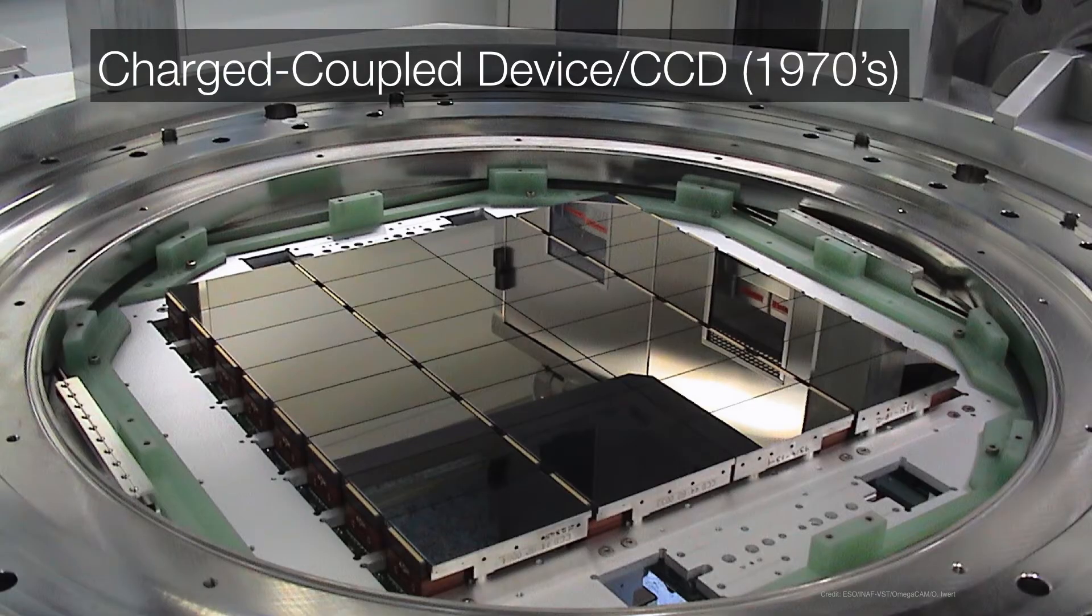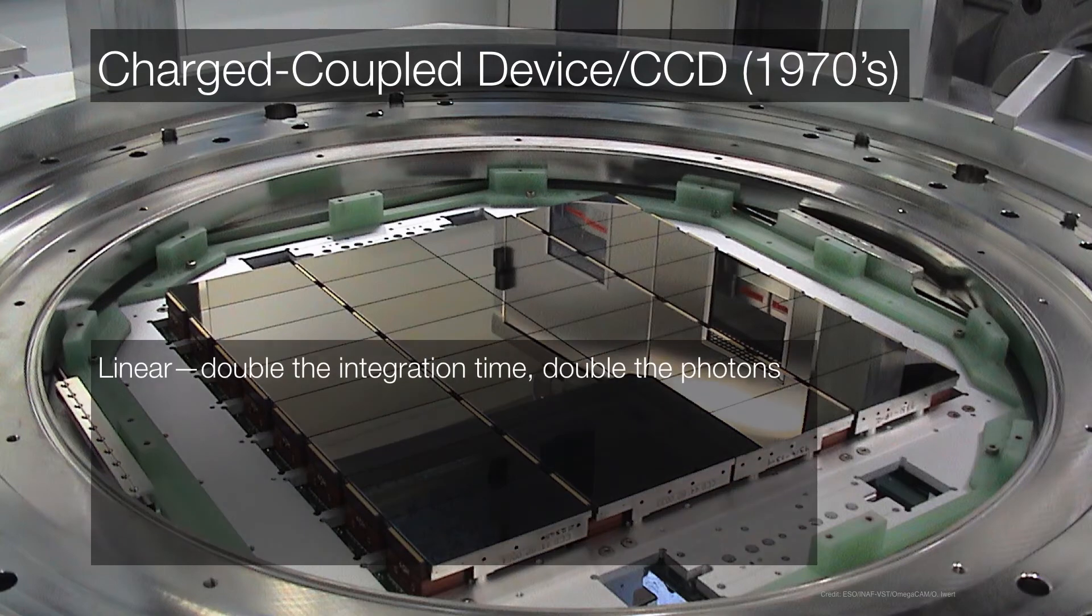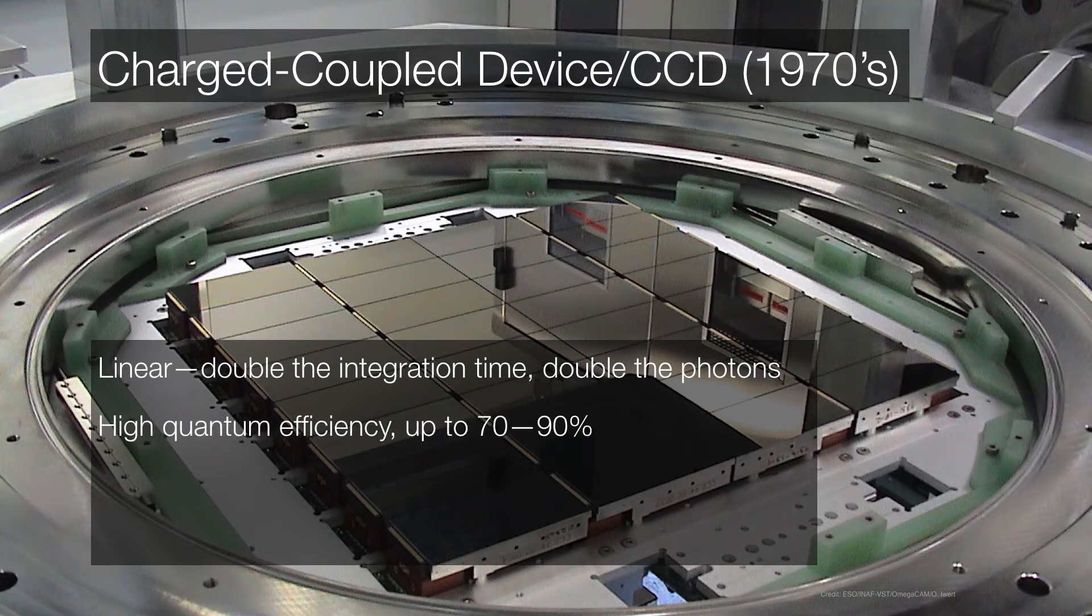So in the 1970s, the charged couple device or CCD was introduced. And if you're not familiar with CCDs, just take a look at your phone. You use them when you take images, any digital images recorded on a charged couple device. And they have several advantages over photographic plates. First of all, they are linear response. In other words, if you double the integration time, or if you double the exposure time, you get double the photons. And you can achieve a very high quantum efficiency. In other words, you can capture up to 90% of the light that falls onto the CCD. Now, since the CCD is by definition digital, that means that you can just read out the data and use the same CCD over and over and over again. There's no removal of the CCDs to process the images. You just read them out and take another exposure.